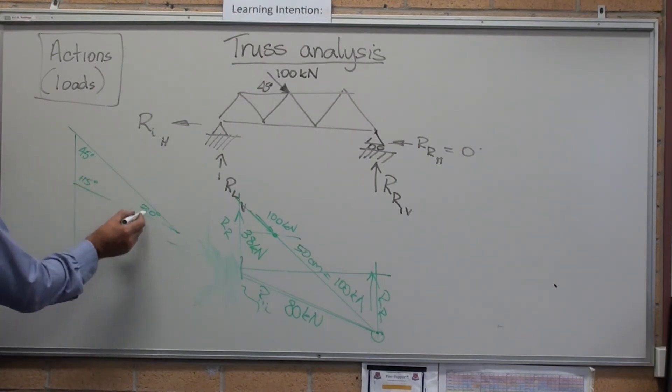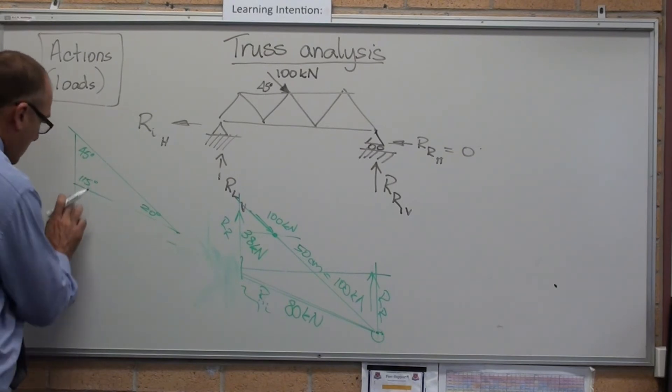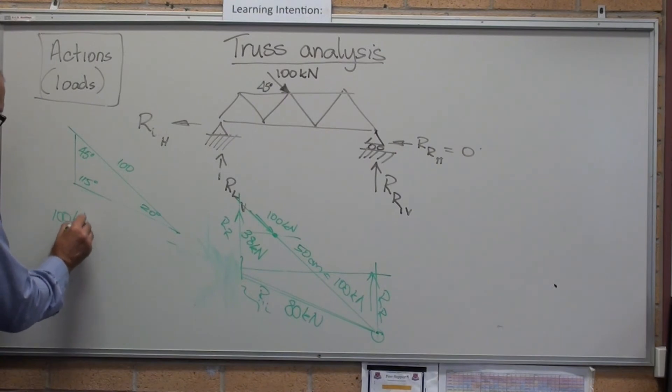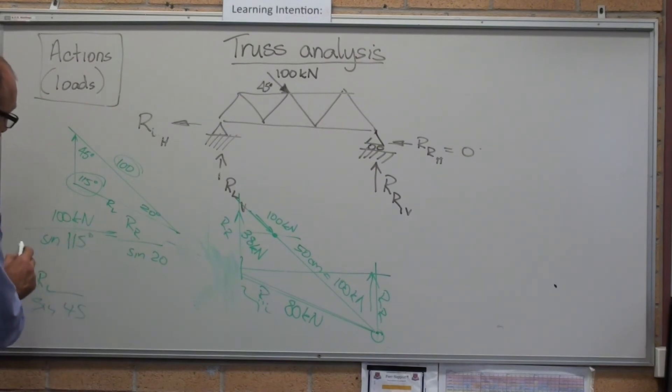Just check 115, 135. Yep, 180. Okay. So that's 100, so 100 kilonewtons. 115 is opposite the 100. 100 kilonewtons divided by sine 115 degrees.